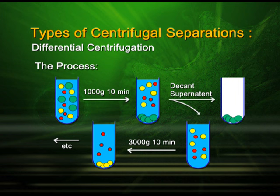Now we go for the second round of centrifugation, where you take the supernatant containing the red and yellow colored particles. This is subjected to centrifugation at a slightly higher RCF and RPM. Slowly, the comparatively bigger sized molecule — that is the yellow colored particle — gets settled down and forms the pellet.